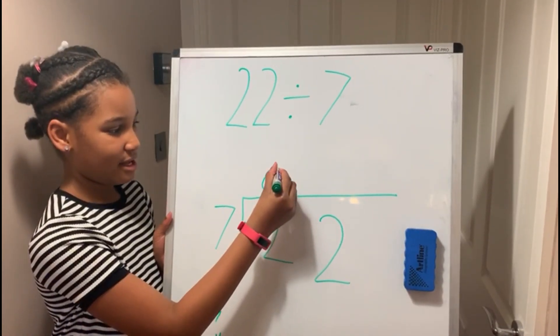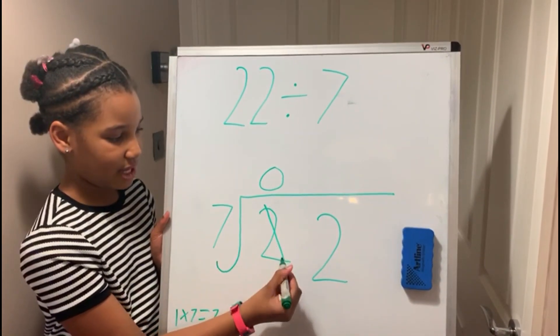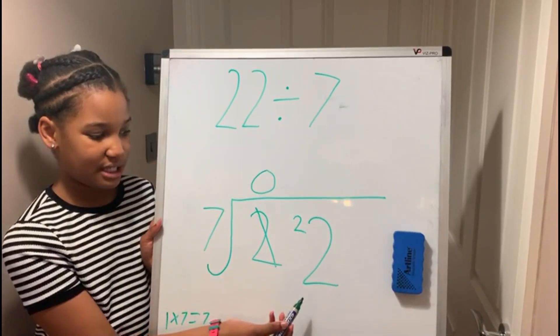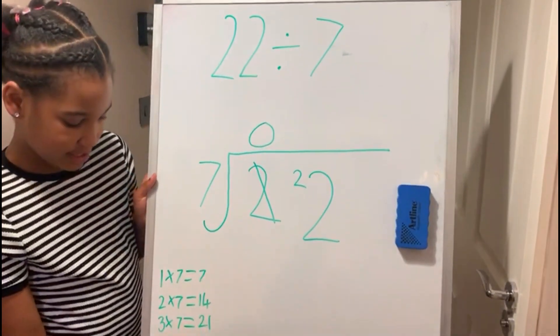So you put a 0 and cross out the 2. And you carry it over to the next number. So how many 7's go into 22? Over here I've written it out.